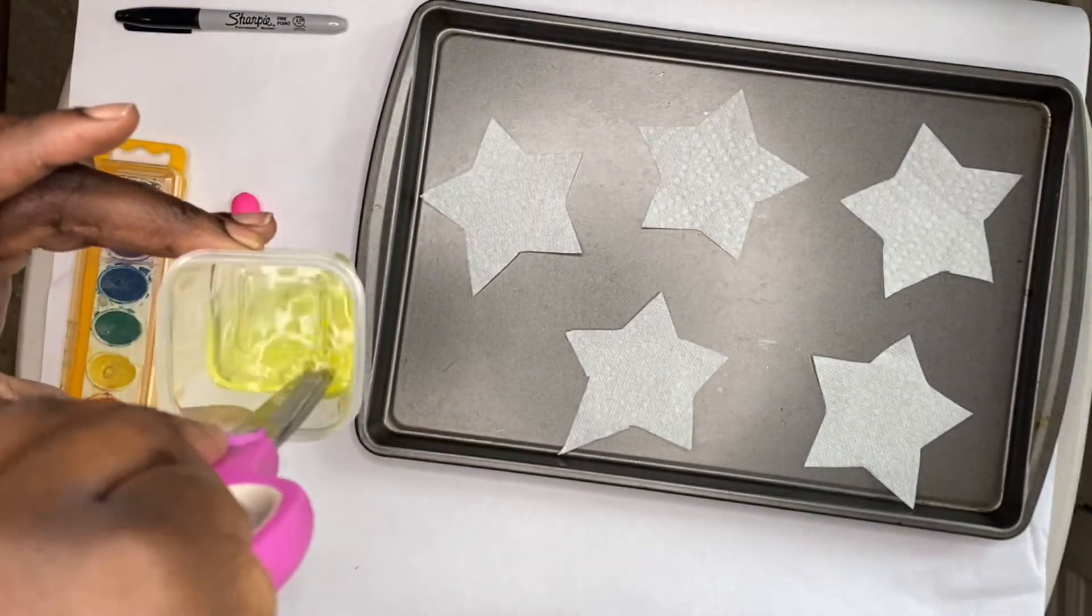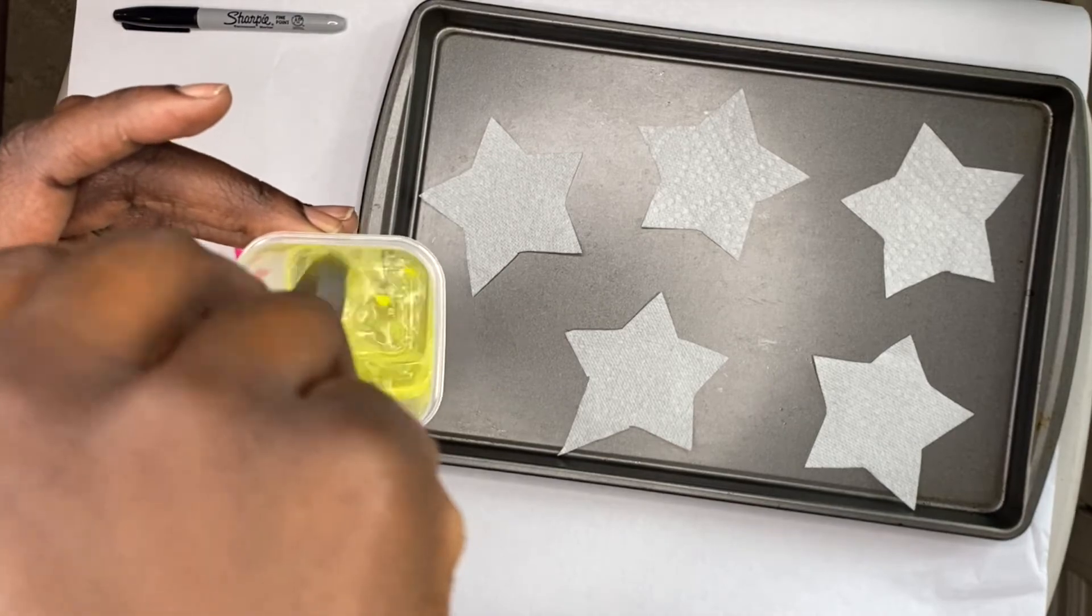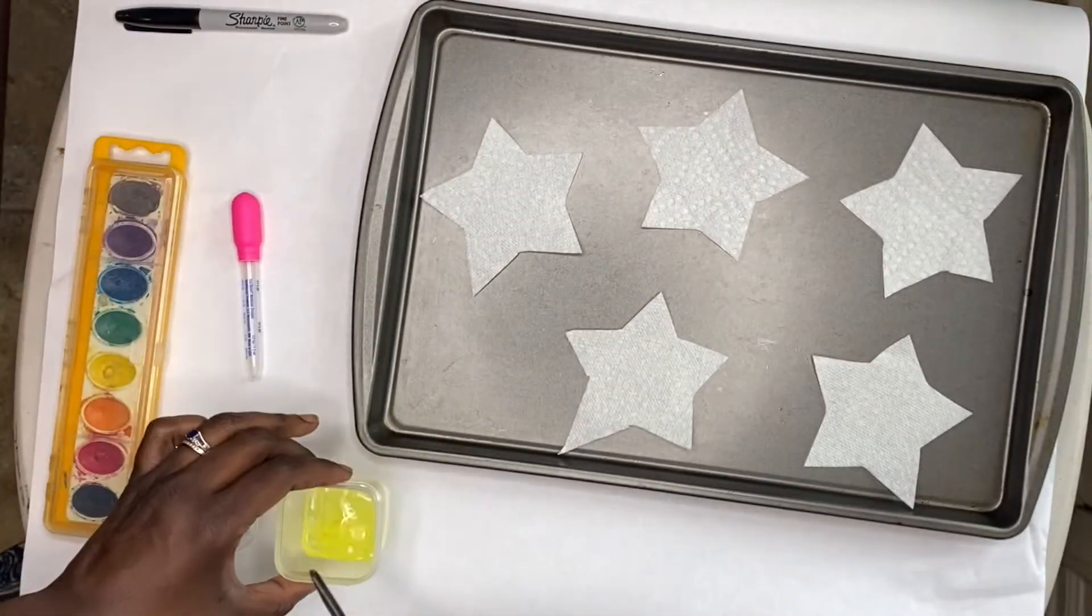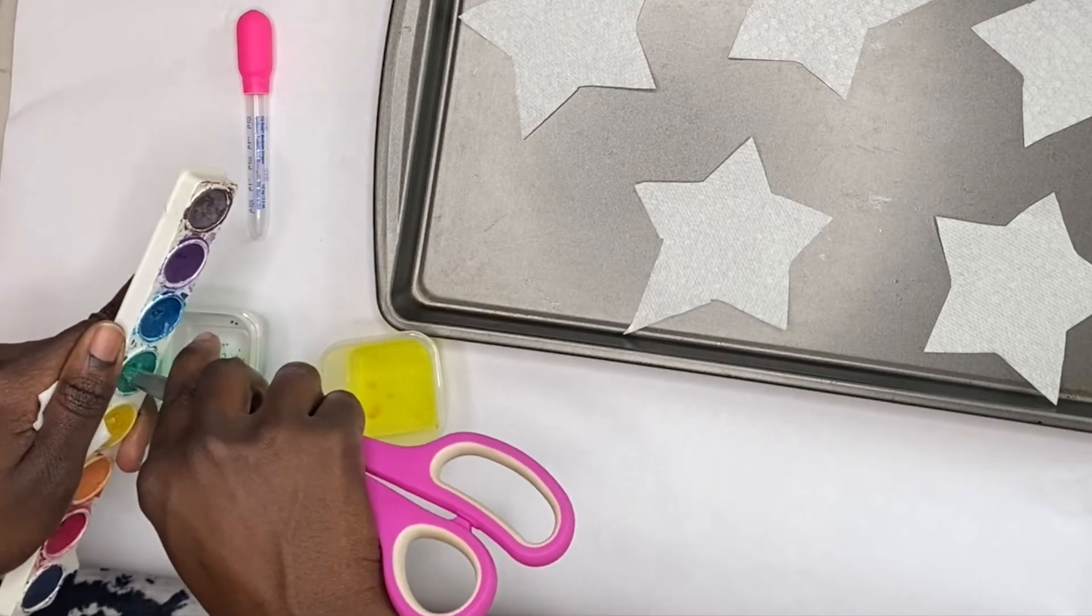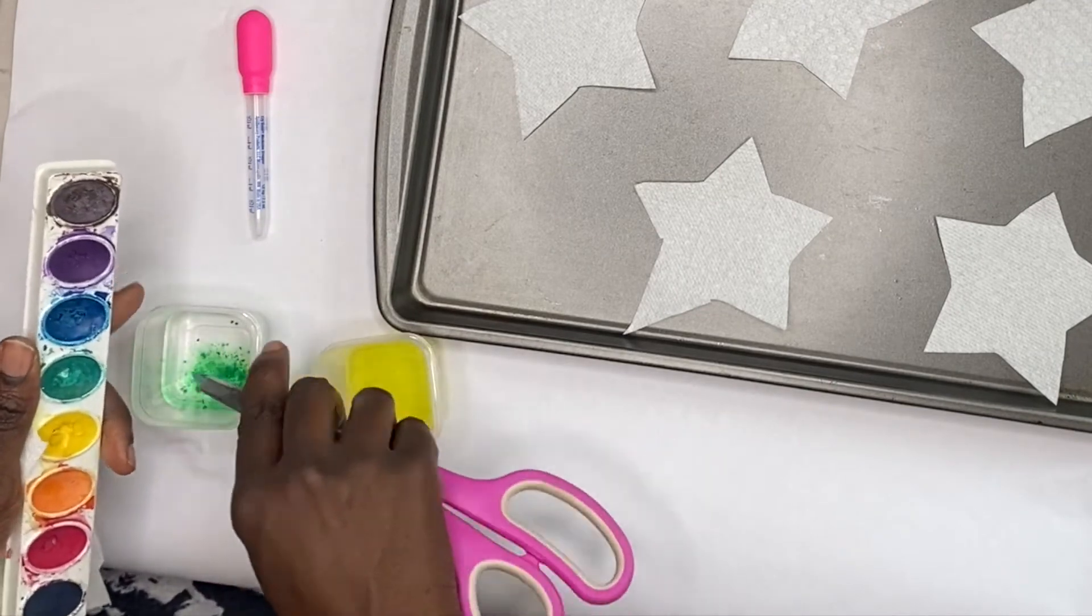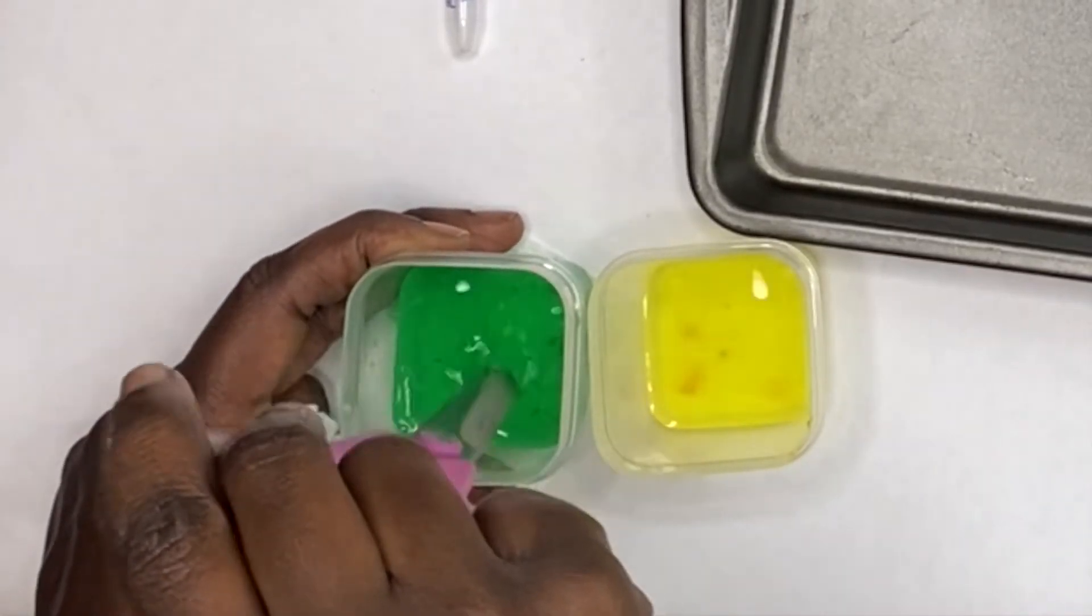But if you want to try this, by all means, I'm pretty sure it'll still turn out nice. Just take your water coloring and use your scissors or something sharp and try to break chunks off into the water. And then stir it up until it dissolves. And that's how I got this color right here.